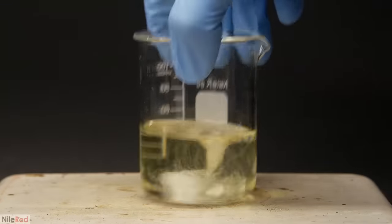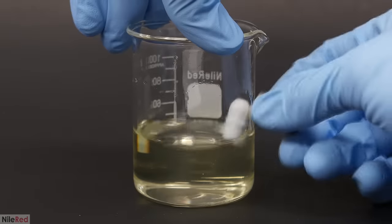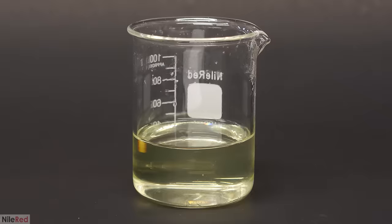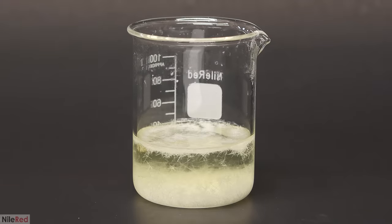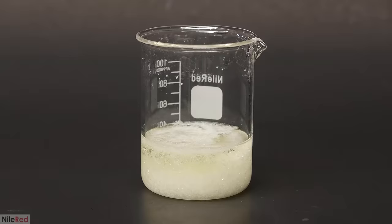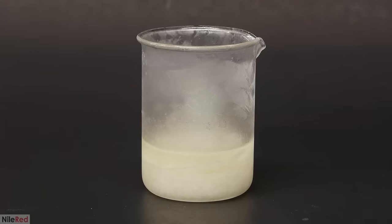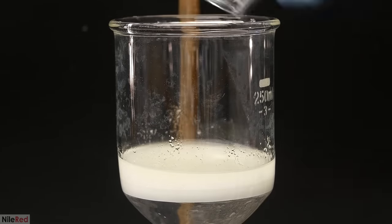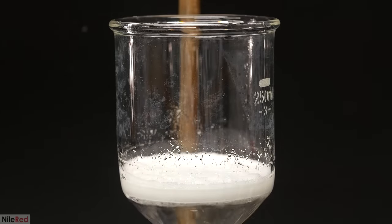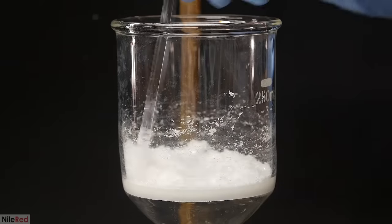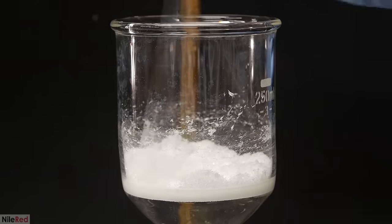When everything had dissolved, I took it off the hot plate, let it cool, and waited for the crystals to form. When it got to about room temperature, I put it in the freezer for a couple hours just to get out as much as possible. The benzoin was again filtered off, and I washed it with some ice cold ethanol. I also left my pump on for about 20 minutes, just to really dry it up.